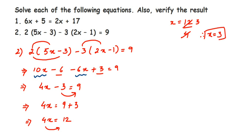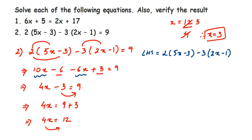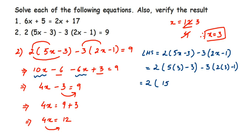In this question also, x = 3. Now we verify. On the RHS we have 9, so we substitute x = 3 into the LHS and check if we get 9. LHS = 2(5x − 3) − 3(2x − 1). Substituting x = 3: inside the first bracket, 5 times 3 is 15, so 15 minus 3. Inside the second bracket, 2 times 3 is 6, so 6 minus 1.